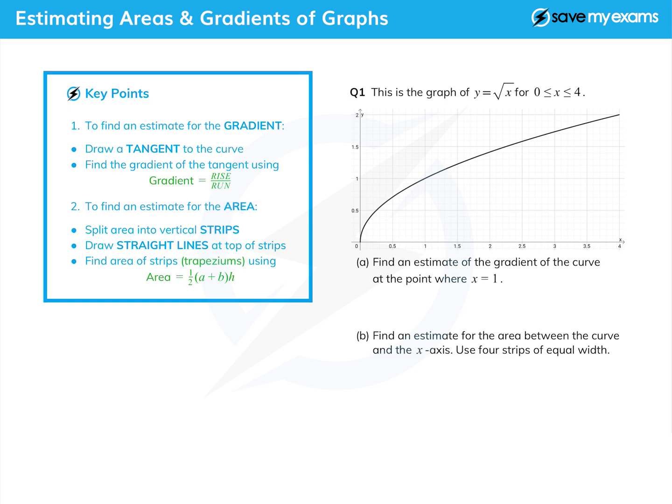Let's do this now. Here's a graph of y equals root x between 0 and 4 on the x-axis. We're asked to first of all find an estimate for the gradient of the curve at the point where x equals one. At the point where x equals one, well y happens to equal one as well, and I'm going to try and draw a tangent at this point.